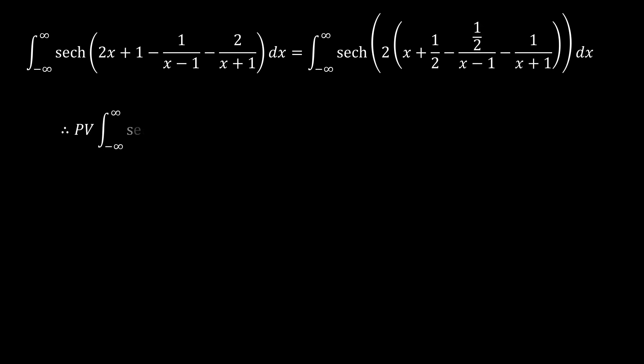What that tells us is that the integral of the hyperbolic secant of 2x plus 1 minus 1 over x minus 1 minus 2 over x plus 1, having expressed it this way, is the same as, with the principal value being taken under consideration, the same as the hyperbolic secant of 2x, from x tending to negative infinity to x tending to positive infinity.